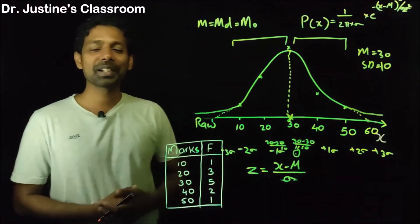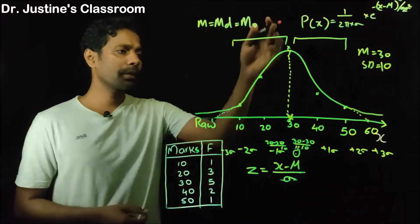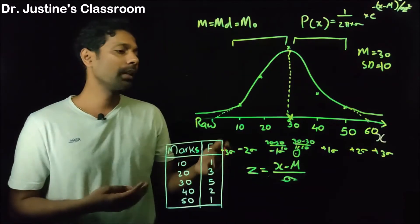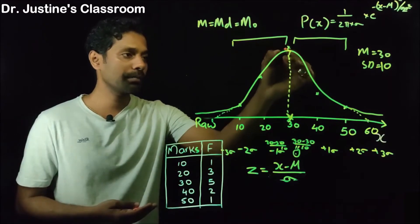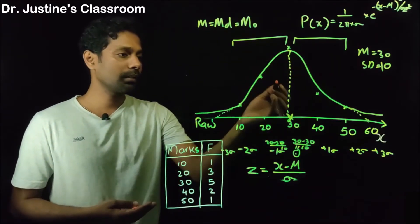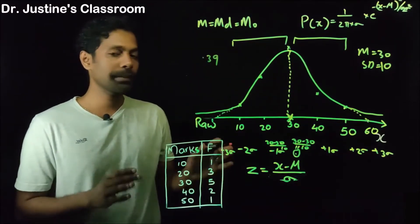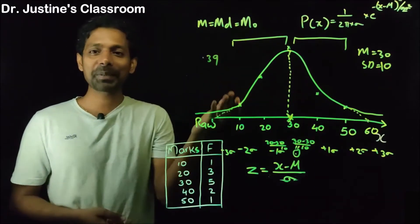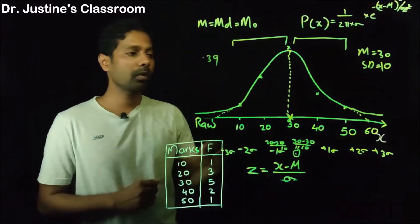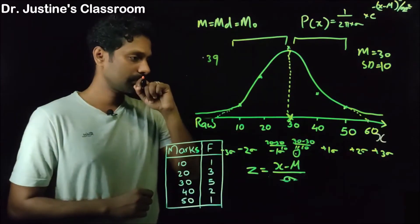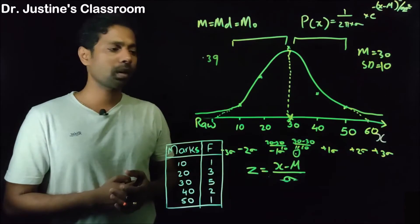Another interesting property of normally distributed data: the maximum peak height of the curve tends to be 0.39. Whatever unit you use — centimeters, meters — in that unit, 0.39 would be the peakness of the curve. That is another characteristic of a normally distributed data.